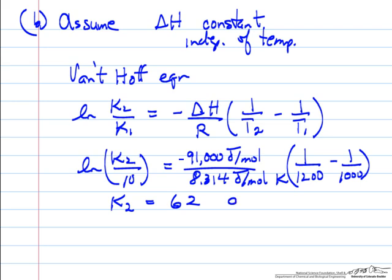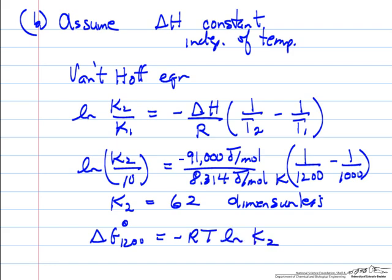K2 is 62, and again, this has no dimensions. And so the Gibbs free energy change at standard conditions, 1200 degrees is minus RT times the log of K2,